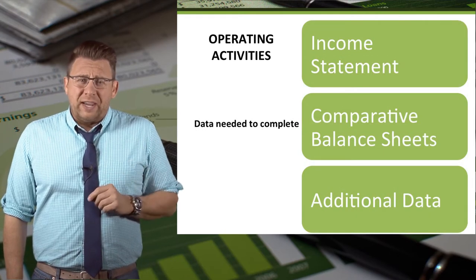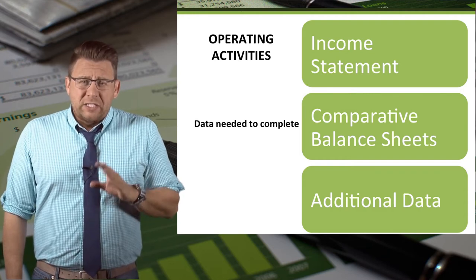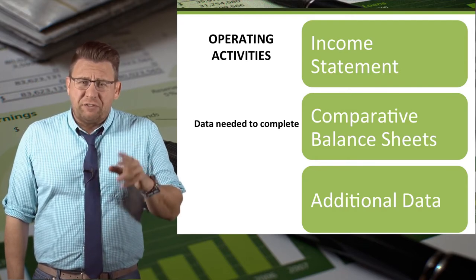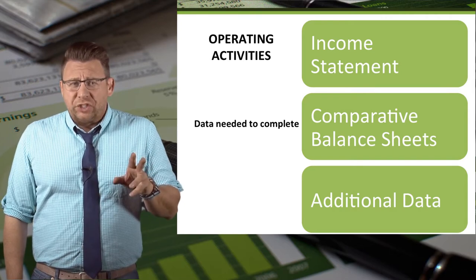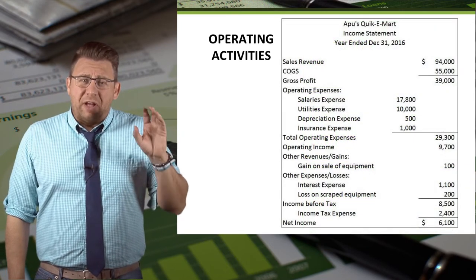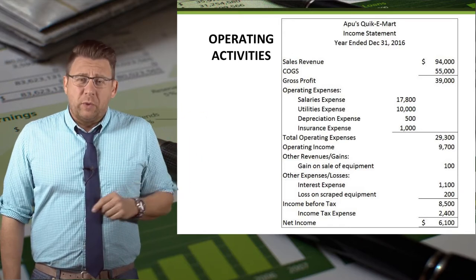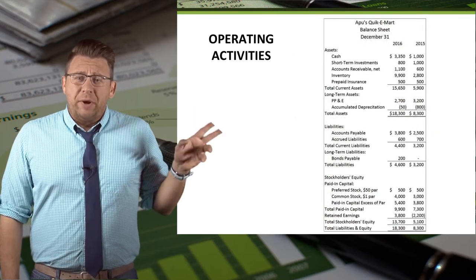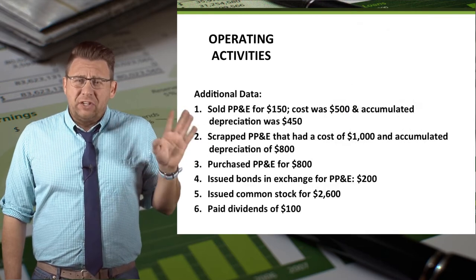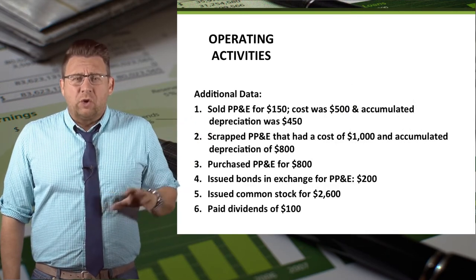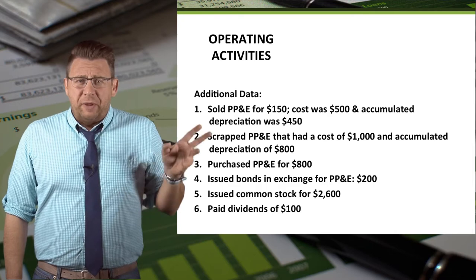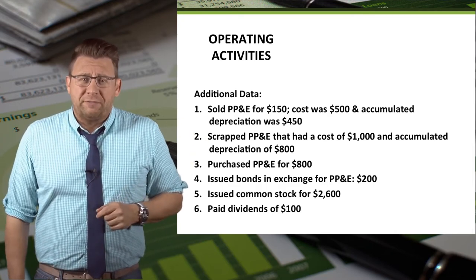In order to prepare a statement of cash flows, we need some financial information. Specifically, we need the current year's income statement, a comparative balance sheet, and some additional financial data. A comparative balance sheet is just a balance sheet that compares two years of data. We'll use the example of Apu's Quickie Mart. Many assignments will provide this information, but I will show you how to calculate it in case a problem doesn't present all the pertinent financial data needed.